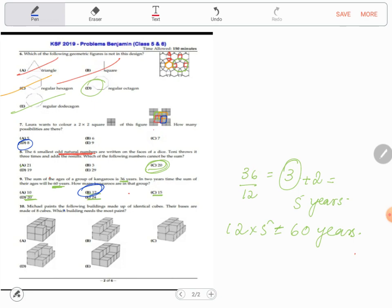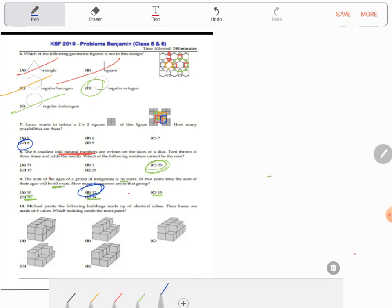The last question of the day, question number 10. We will do four point problems in the next video. Question number 10: Michael paints the following buildings made up of identical cubes. Their bases are made up of eight cubes. Which building needs the most paint? This is the most difficult of all the three point problems in this paper. We need to look at and observe the things. They are saying that each of these structures is made up of eight base cubes, so we'll neglect the bottom cubes.